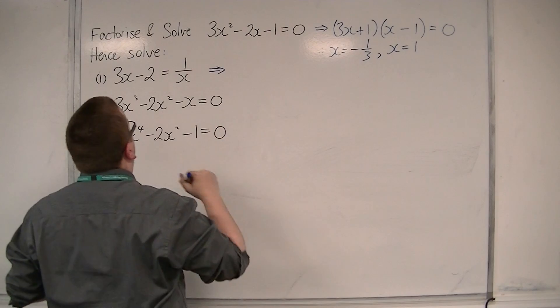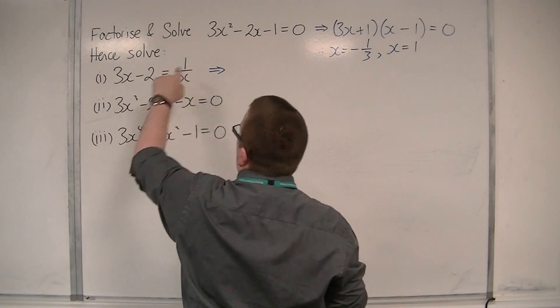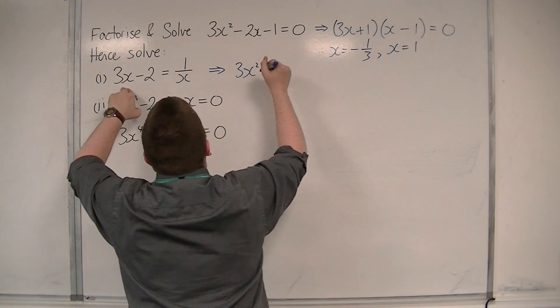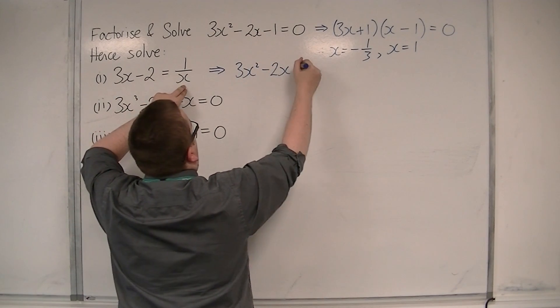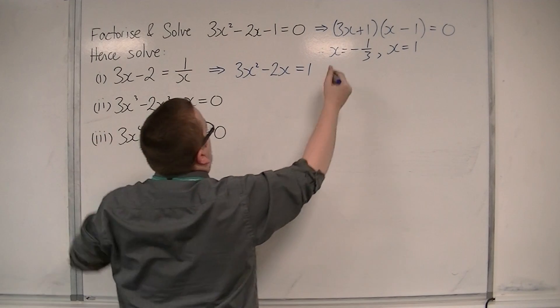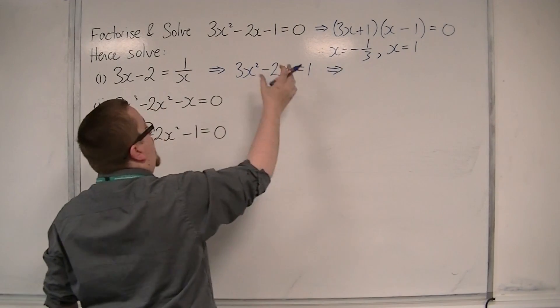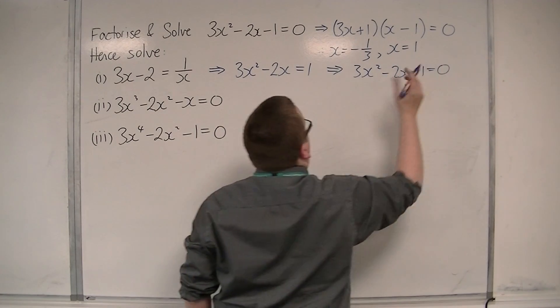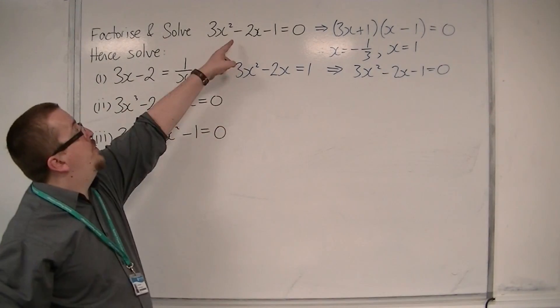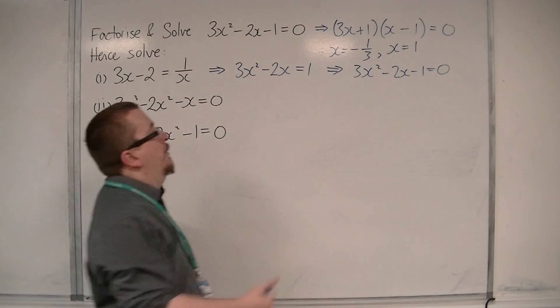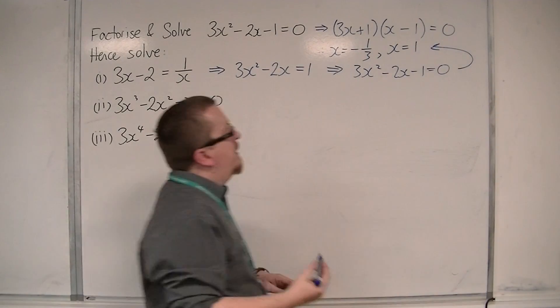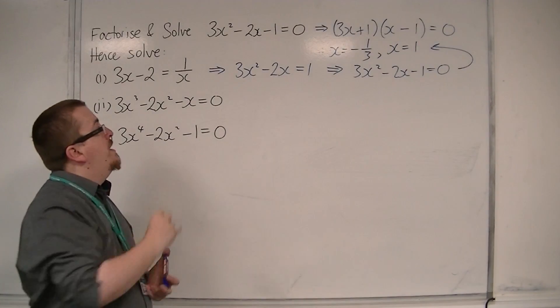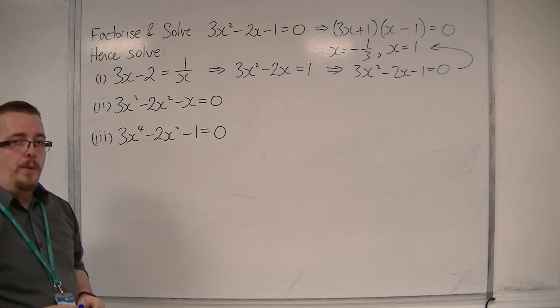Assuming that x isn't 0, of course, which it really can't be. Multiply everything through by x, we get 3x squared minus 2x, and we're going to get equals 1. Then, I can take 1 from both sides, and then I am back to the original quadratic equation, for which I know the solutions are minus 1 third and 1. Just simple rearrangement allowed me to solve that first one.